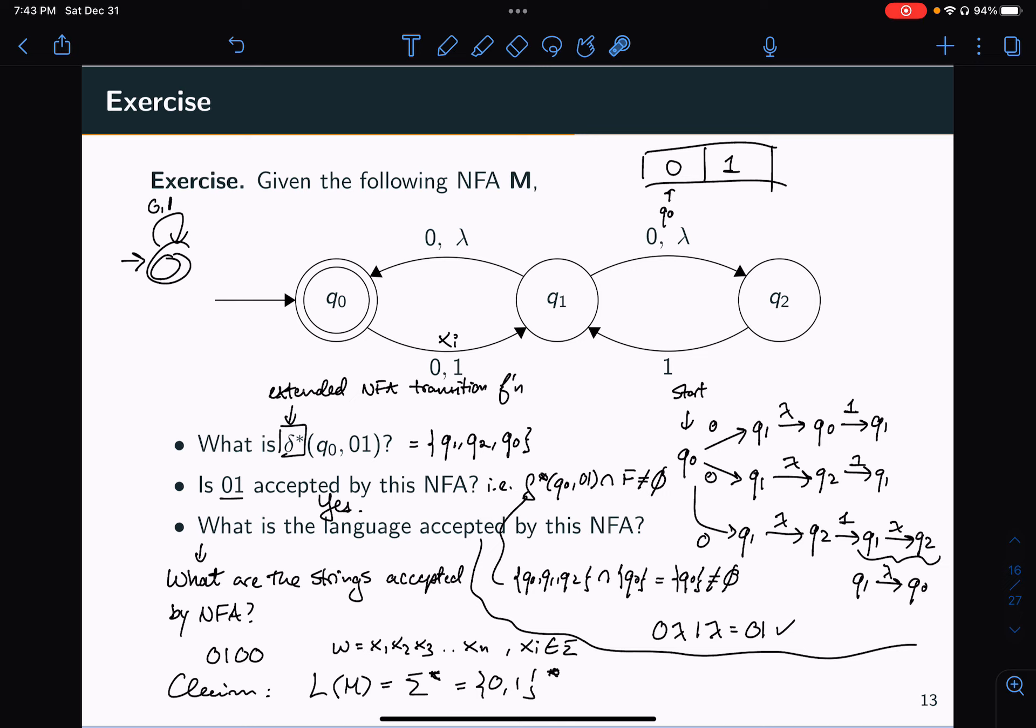And then because you can use lambda transitions for free to get back to Q0, and because if I have this string, it's equivalent to having X1 lambda, X2 lambda, X3 lambda, and so on, Xn lambda.